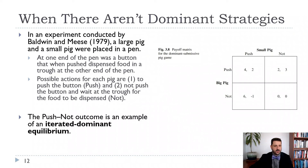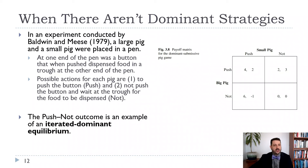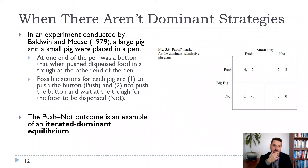If they both push, big pig gets 4 and small pig gets 2. If the big pig doesn't push and the small pig does, big pig gets 6 and small pig gets minus 1 — because the big pig eats everything since it's at the other end of the trough. If the big pig pushes and the small pig doesn't, big pig gets 2 and small pig gets 3. If they both don't push, they both get zero because no food is dispensed.